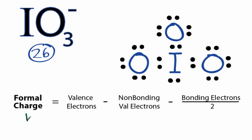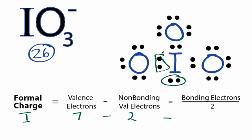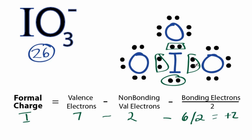For the iodine: iodine has seven valence electrons on the periodic table. Non-bonding, we have two right here that are not involved in the chemical bond. Minus bonding — we have two, four, six — which we divide by two. That gives us a plus two formal charge for the iodine.